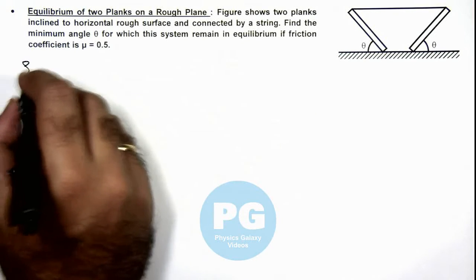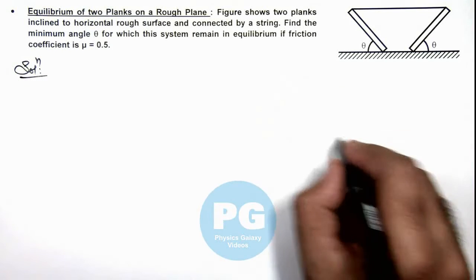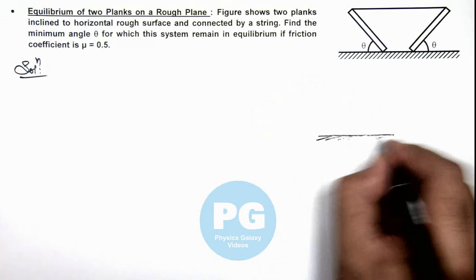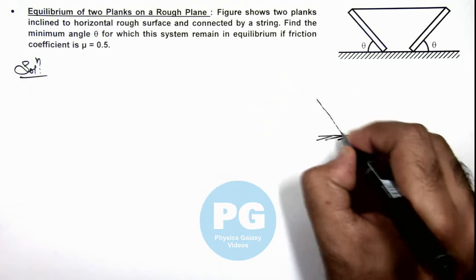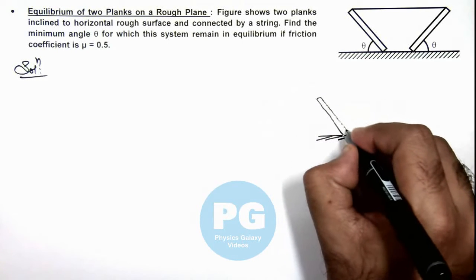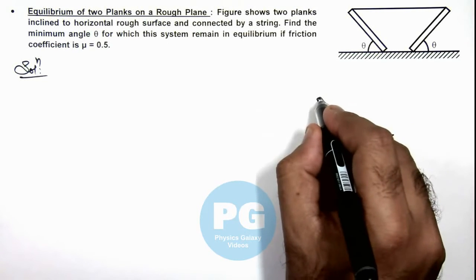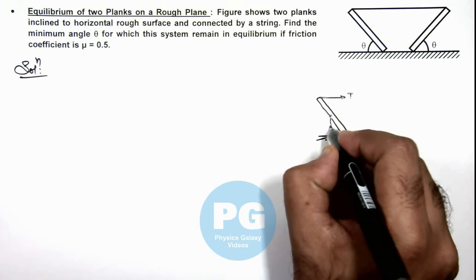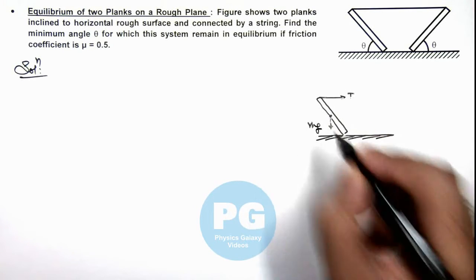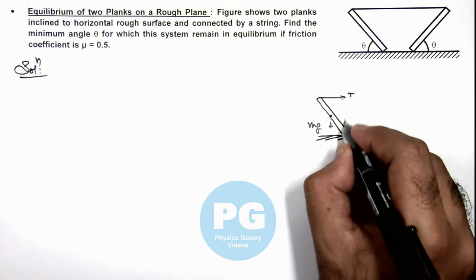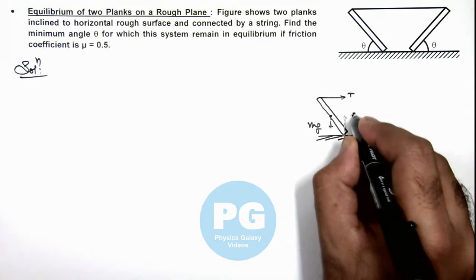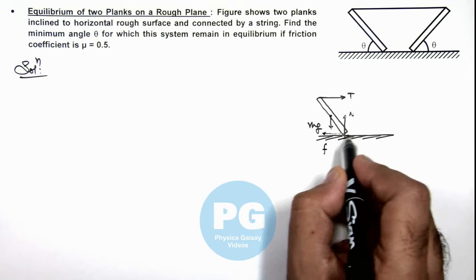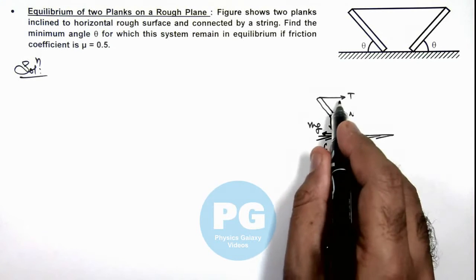So in this situation if we draw the free body diagram of a plank, either of these two planks, then we can see if this is a plank, tension would be acting in this direction, at center its weight mg would be acting in downward direction. Here normal reaction is in upward direction and to balance this tension, this friction will act in the direction of positive tension.